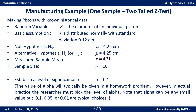Let's summarize what we know. We're making pistons with known historical data. The random variable x is the diameter of an individual piston, distributed normally with a standard deviation of 0.12 centimeters. The null hypothesis H₀ is that mu equals 4.25 centimeters — really this encompasses the full distributional assumption, but it's usually just written as the value of mu. The alternative hypothesis H₁ is that mu is not equal to 4.25.